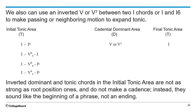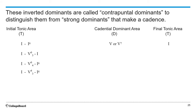These inverted dominants are sometimes called contrapuntal dominants to distinguish them from the strong dominants that make the cadence. Because they're inverted, they use passing or neighboring voice leading and parsimonious voice leading. Parsimonious is a fancy theory word meaning stepwise and common tones — a very smooth voice leading. Because they use this very smooth voice leading, they don't have the motion that the cadential dominant to tonic will have, where usually you have a root position chord going to a root position chord with a leap in the bass.